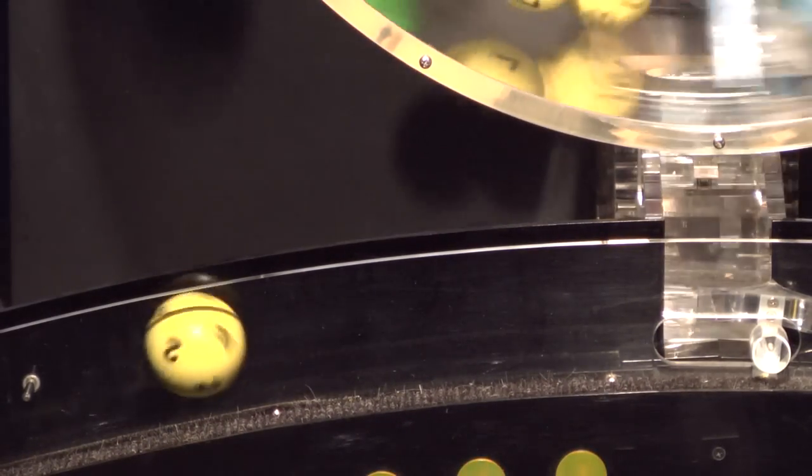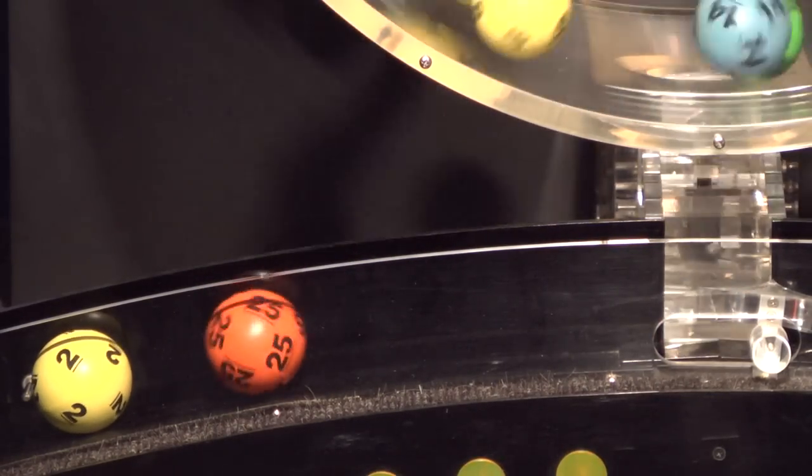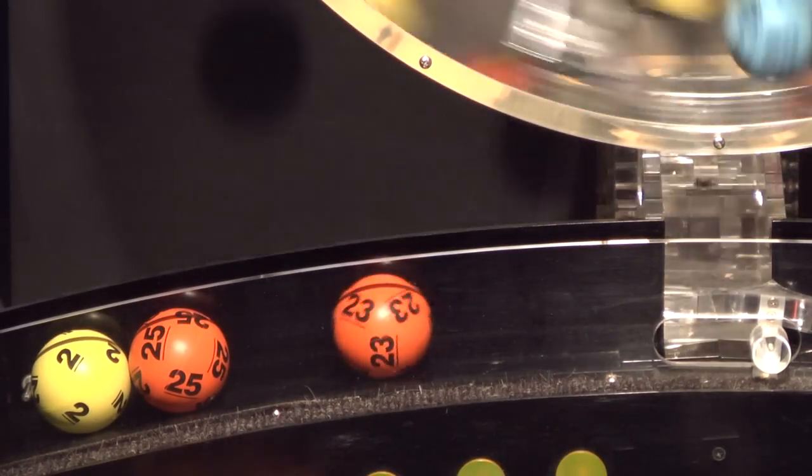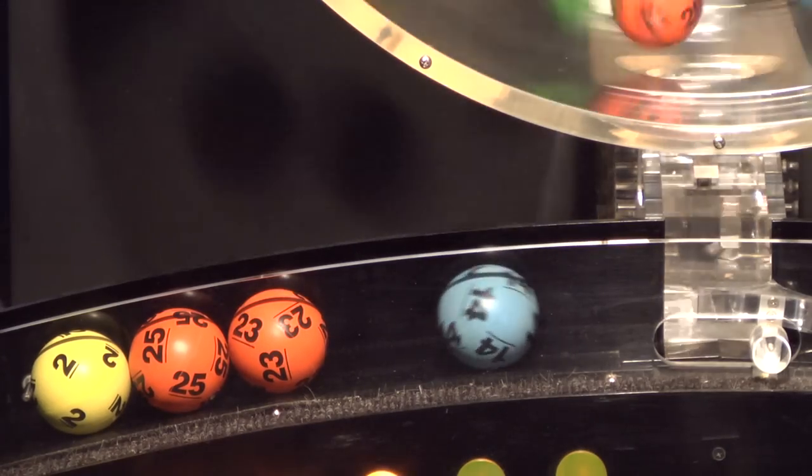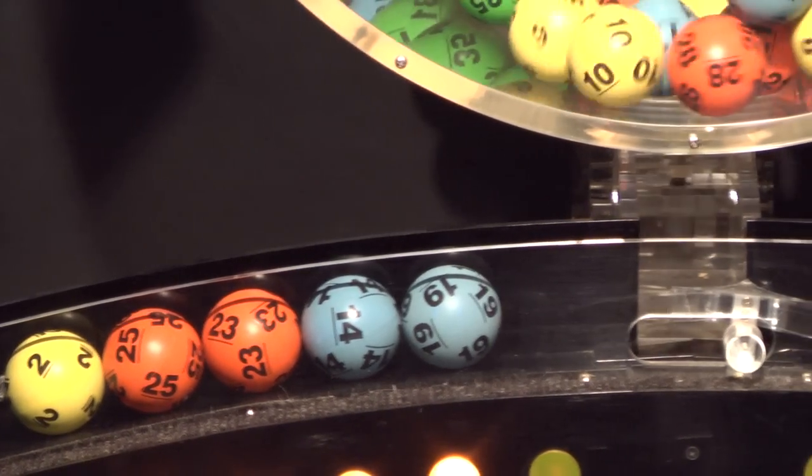Our first number up is number 2, and after that we have number 25, and here comes number 23. Up next is 14, and the final ball in this sequence is number 19.